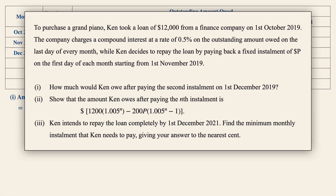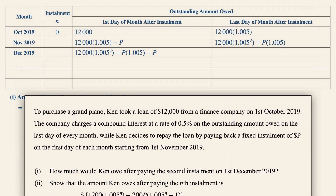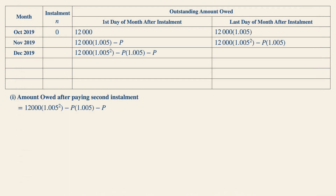In part two, we need to show that the amount owed after paying the nth installment is given by the expression shown here. When we see the term n, it is ever so important to establish a pattern. Notice that on the first installment, n is 1, and the power in the expression is 1 as well.